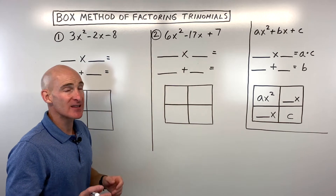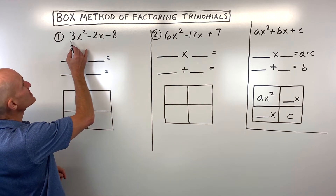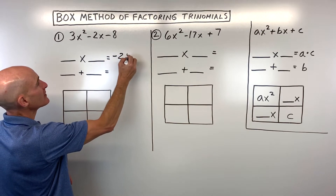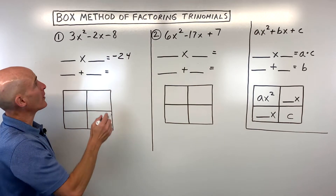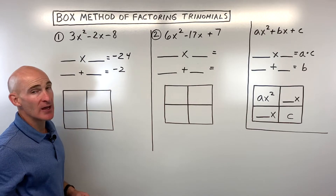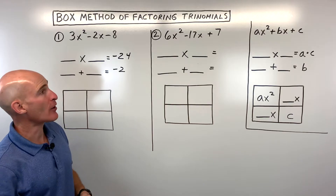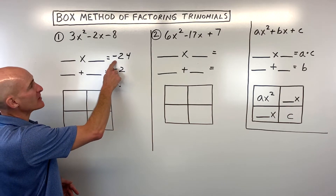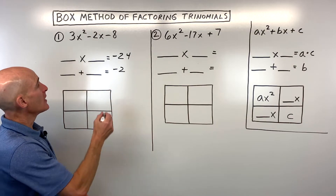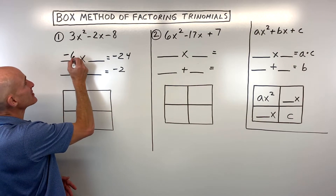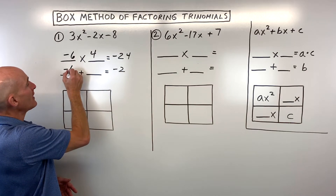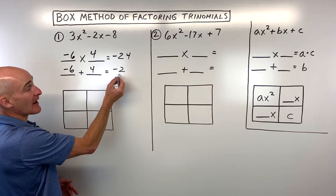Let's go through some examples — it's a lot easier than it sounds. So you'd say 3 times negative 8. You're asking: what two numbers multiply to negative 24, but have to add to this middle coefficient, negative 2? What two numbers multiply to negative 24 but also add to negative 2? That's going to be negative 6 times positive 4, which equals negative 24. And negative 6 plus 4 adds up to negative 2.